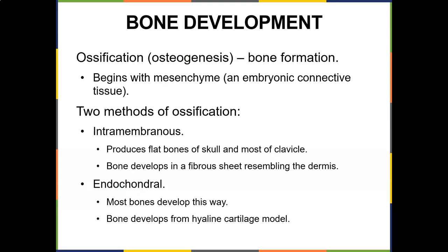Mesenchyme first condenses within a soft sheet of tissue permeated with blood vessels — the membrane to which intramembranous refers. The mesenchyme cells line up along blood vessels, become osteoblasts, and secrete a soft collagenous osteoid tissue. Calcium phosphate and other minerals then crystallize and harden the collagen fibers of the matrix.